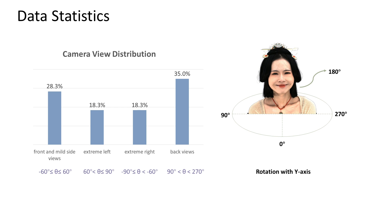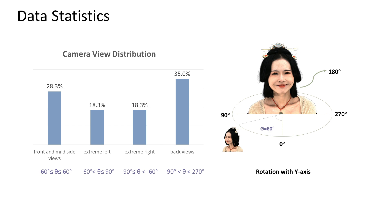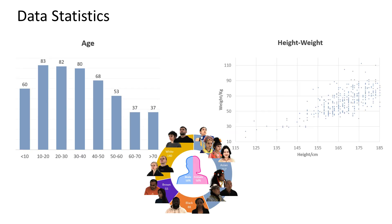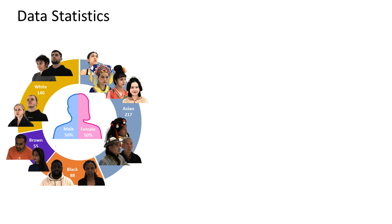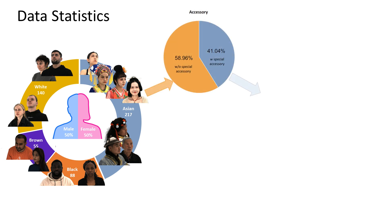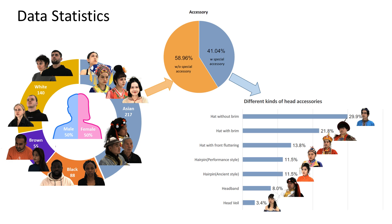Camera views are divided into 4 groups based on rotation angle with the y-axis. Front and mild-side views are convenient for face-fitting algorithms; extreme left and extreme right views are challenging for landmark detection, while back views are helpful for hair reconstruction. To extend variety of face shapes, we also captured young kids, seniors, overweight and skinny subjects. Parts of Asians are captured with special clothing and head accessories, and head accessories are grouped into 7 categories based on styles.